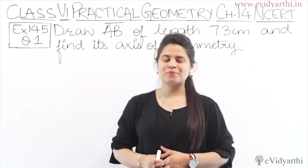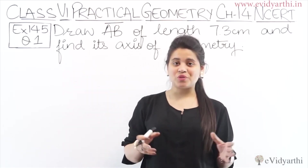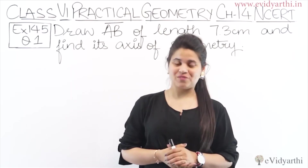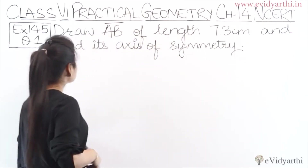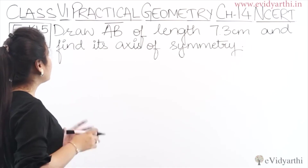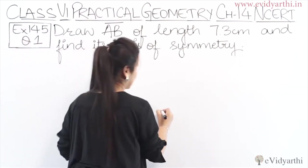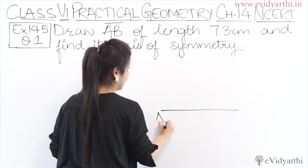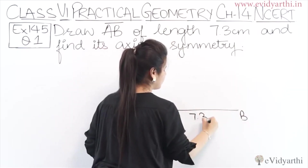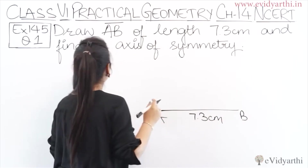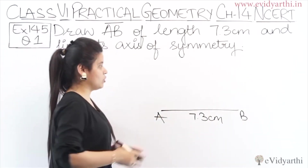Hello guys, this is Manasi from A with Adil Chaj. Now we are going to start with Exercise 14.5. This is question number 1. In this question we have drawn AB of length 7.3 cm. You have to draw a line segment AB of length 7.3 cm and find its axis of symmetry.